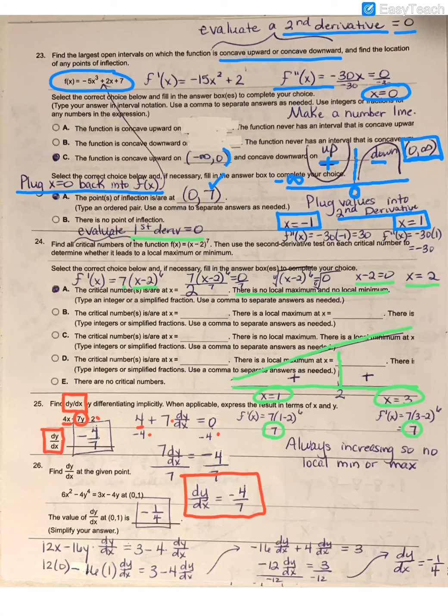Same thing on number 26. Notice when I took the derivative of 6x squared, I got just a plain 12x.